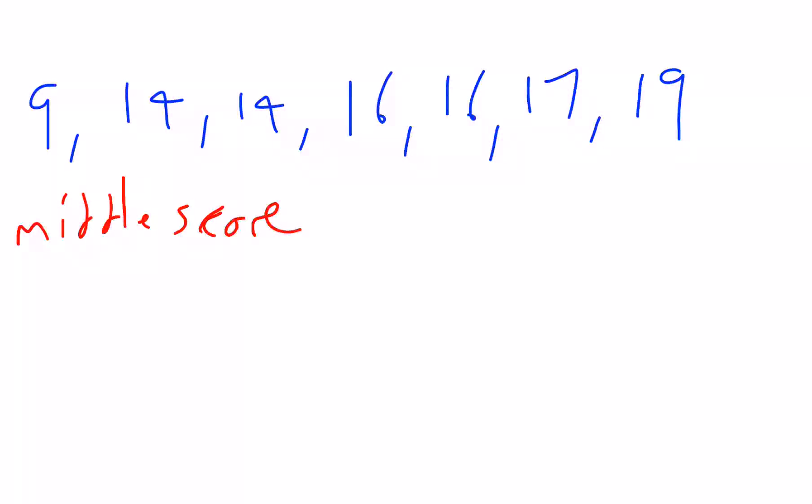So the middle score here is 16. One, two, three from each end. The median is 16.